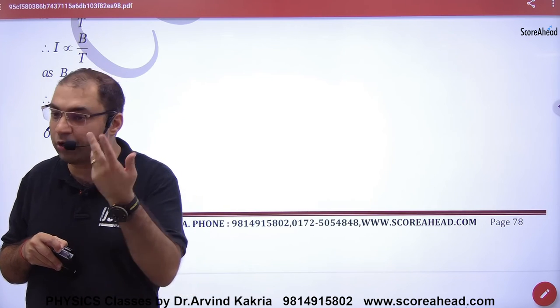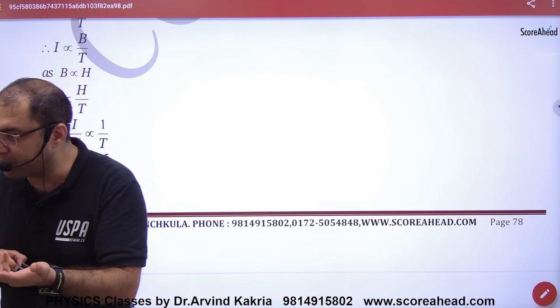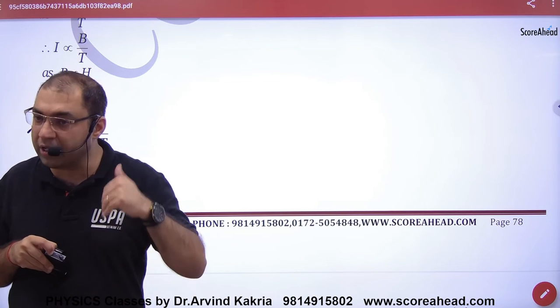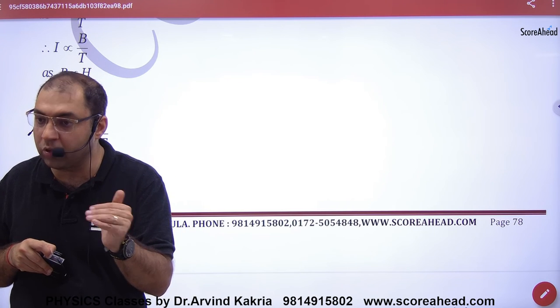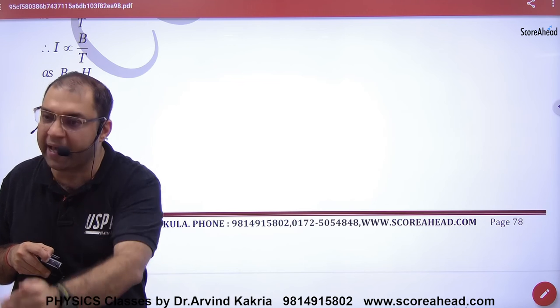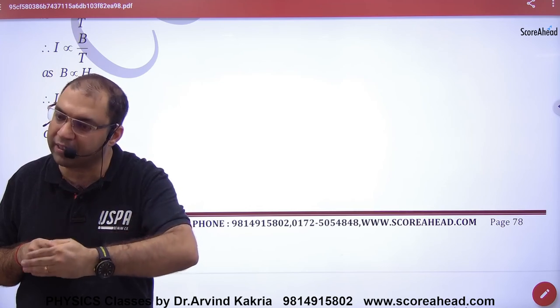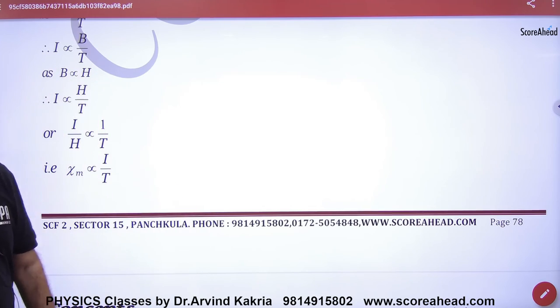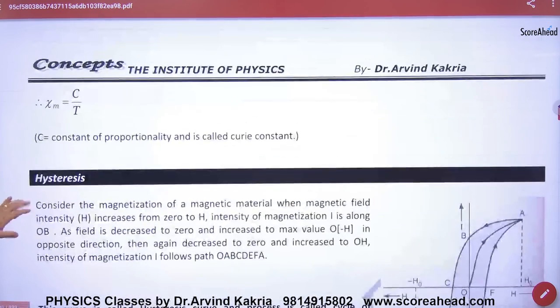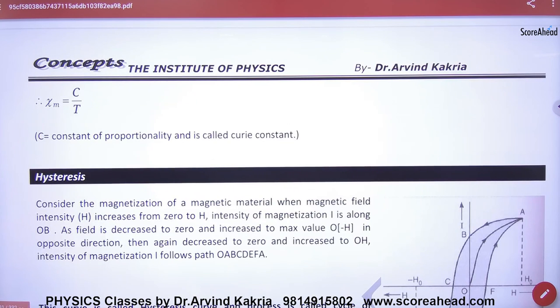So if the temperature is high for any substance, then Chi will be less and it will be less magnetic. And if the temperature is low, then Chi will be more and the substance will be more magnetic. So this is Curie's Law in Magnetism, and C is the constant.